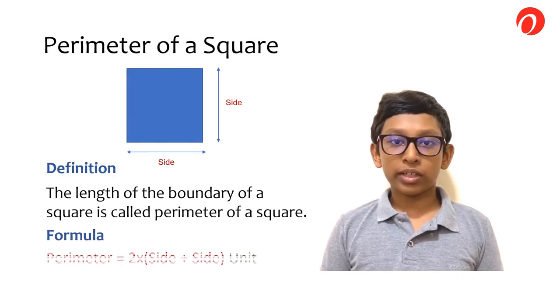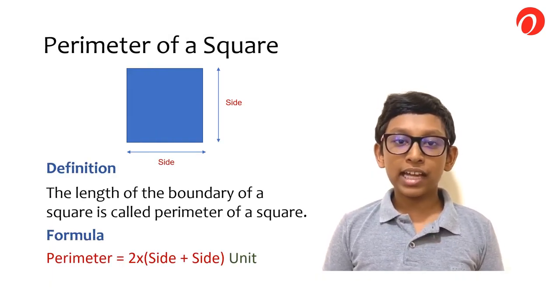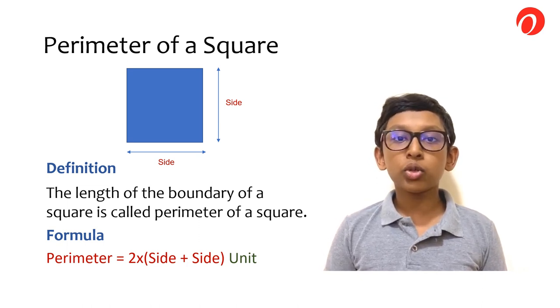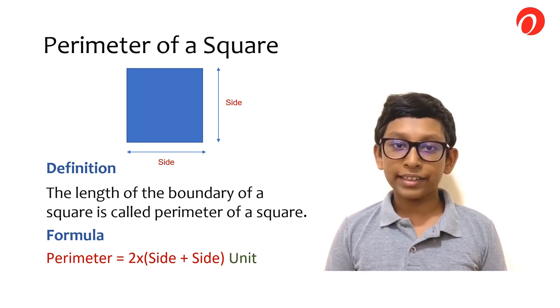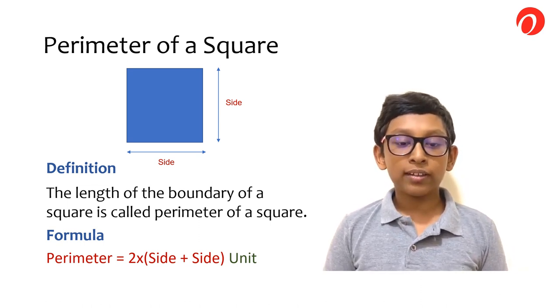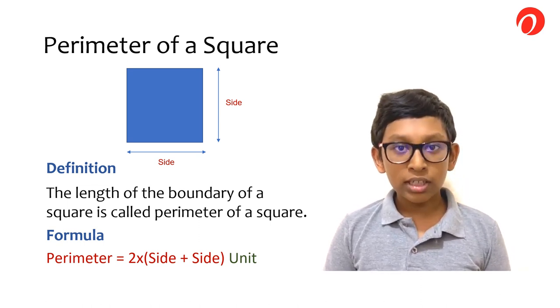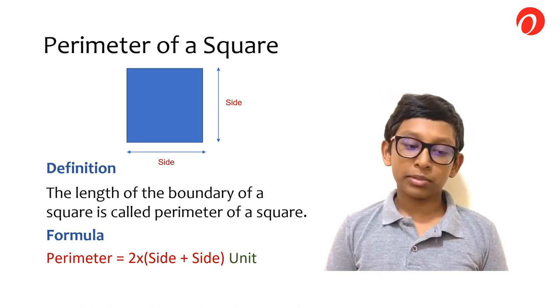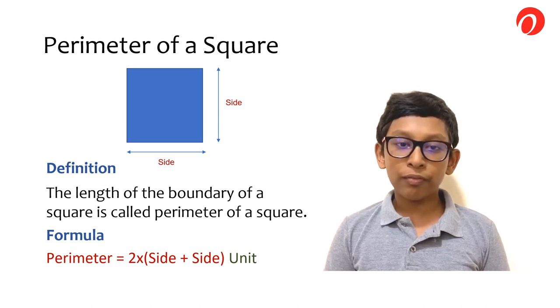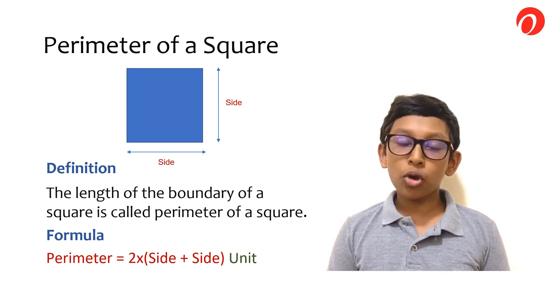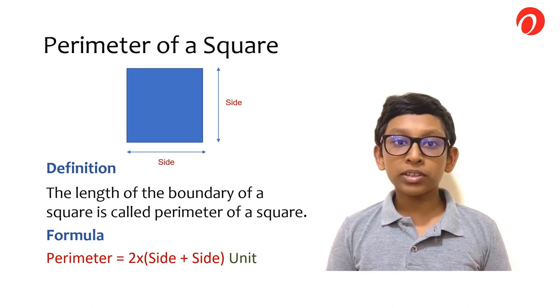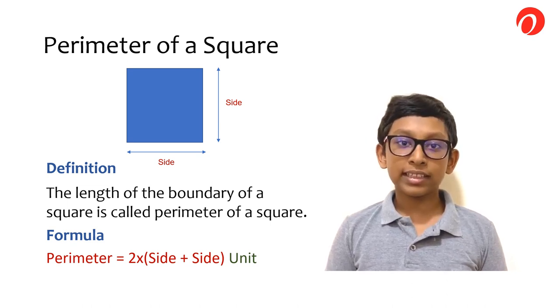The perimeter of a square can be defined as the length of the boundary of a square. The formula is 2 into side plus side. For example, if I have a square that is 4 cm times 4 cm, in this case, 2 into 4 plus 4. 4 plus 4 is 8 times 2 is 16. So the perimeter of the square is 16 cm.